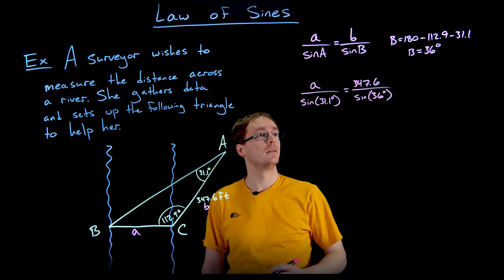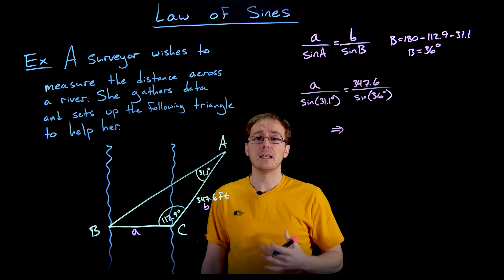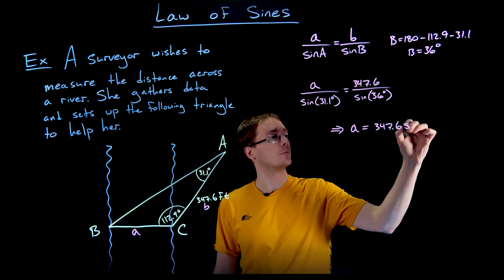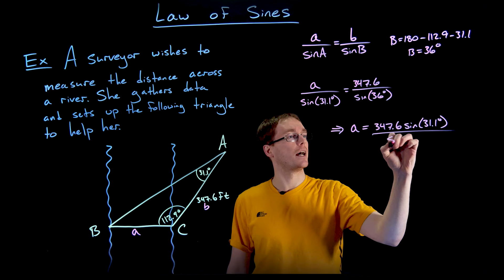All right, so now it's only one step to solve for a with this setup. We have to multiply both sides by sine of 31.1 degrees, and that tells us that side length a is equal to 347.6 times sine of 31.1 degrees divided by sine of 36 degrees.